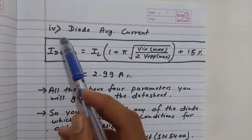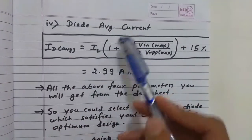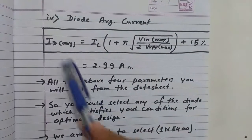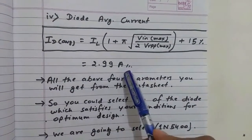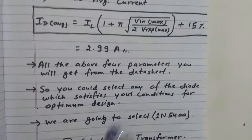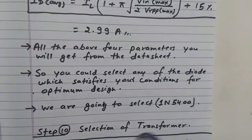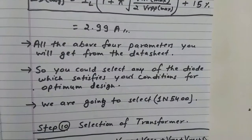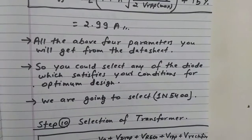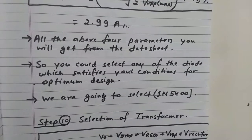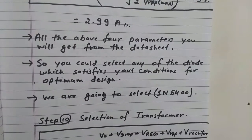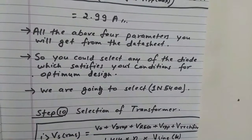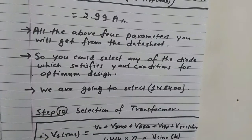The diode average current formula gives 2.99 A. All these values are obtained from the datasheet, and you can select any diode satisfying your conditions. For this optimum design we select the 1N4540 (1N4540).